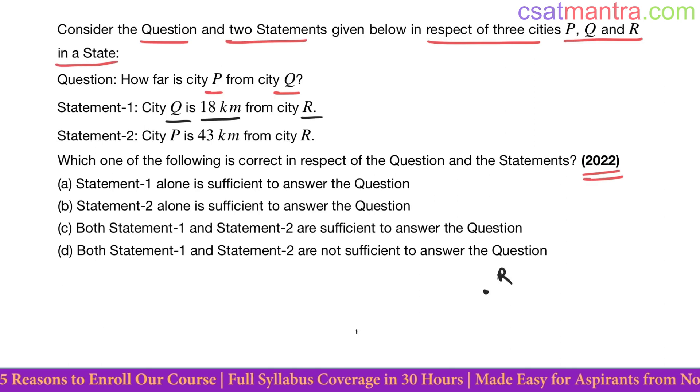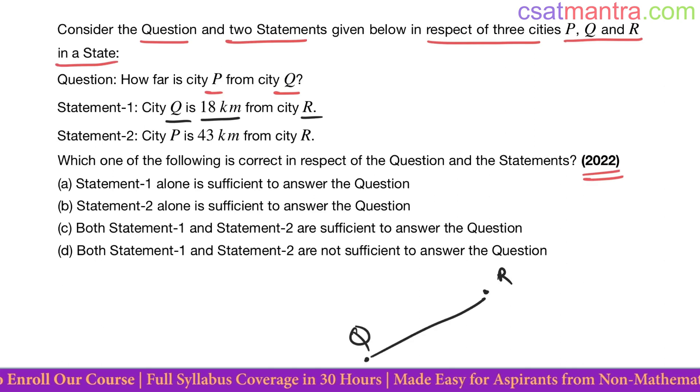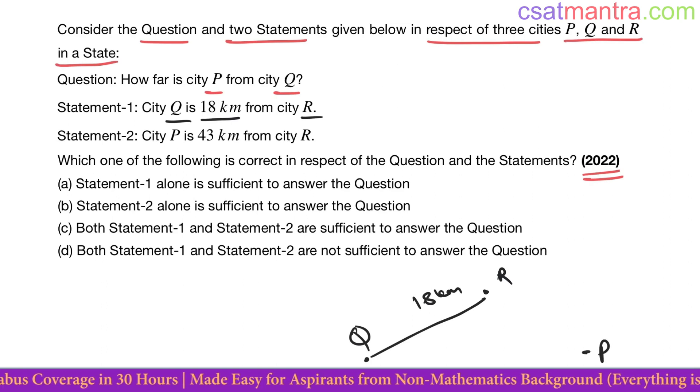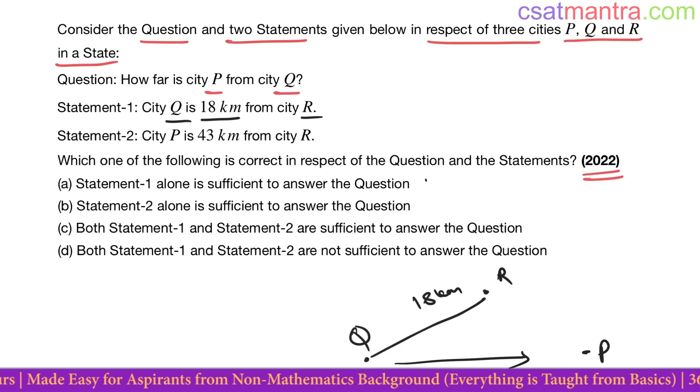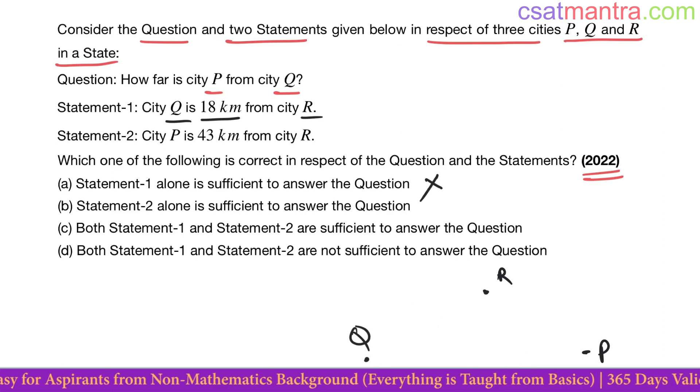Okay, this is R, this is Q, distance between them is 18 kilometers. Now it says nothing about the distance between P and Q, so Statement 1 is not sufficient. Now consider Statement 2 alone: P is 43 kilometers from R.